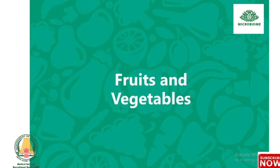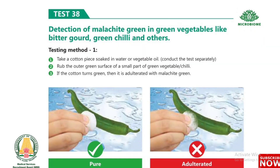Next, about fruits and vegetables. Test 38: Detection of malachite green in green vegetables like bitter gourd, green chili, and others. Method 1: Take a cotton piece soaked in water or vegetable oil. Rub the outer green surface of the vegetable or chili. If the cotton turns green, then it is adulterated with malachite green.